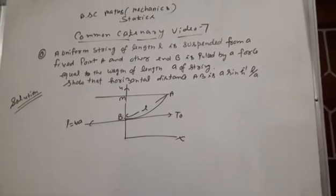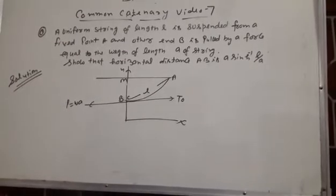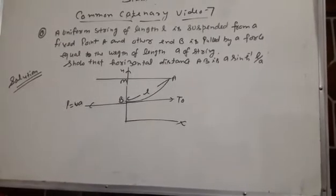Common catenary video number 7. Question: A uniform string of length l is suspended from a fixed point A and the other end B is pulled by a force equal to the weight of length a of string, such that the horizontal distance AV is a sinh⁻¹(x/a).